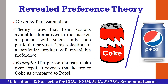This theory was given by Paul Samuelson. It states that from various alternatives available in the market, a person will select or choose only one particular product, and this selection of a particular product will reveal his preference. For example, a person chooses Coke over Pepsi, which means that the person prefers Coke as compared to Pepsi. So this is what this theory states.